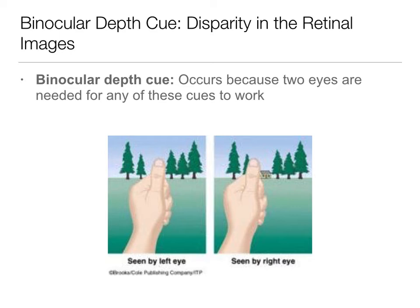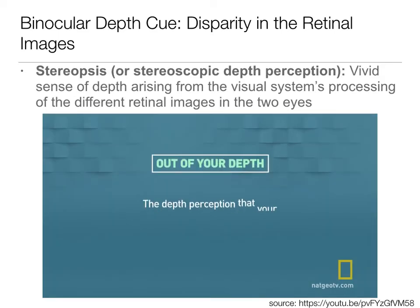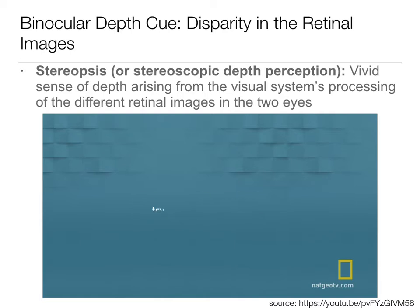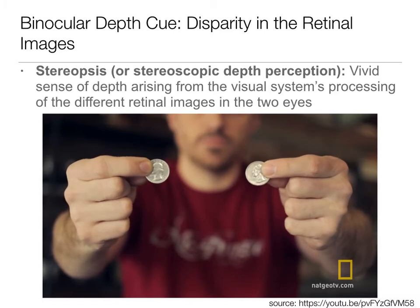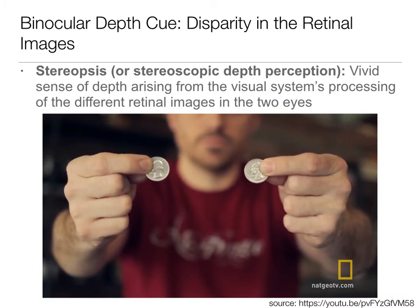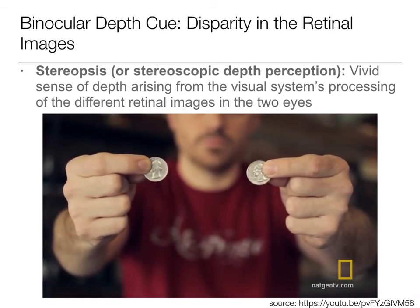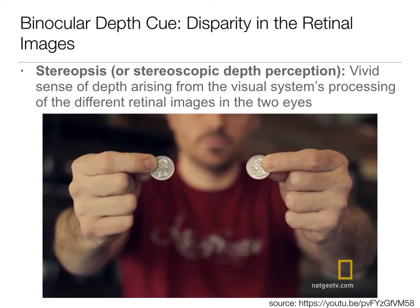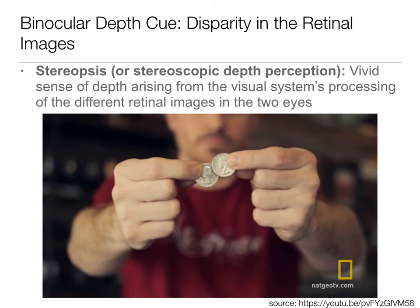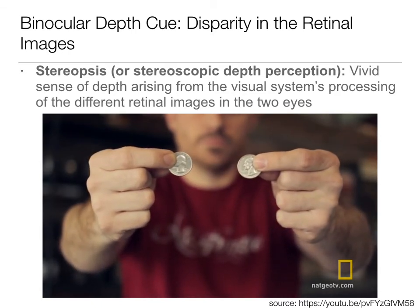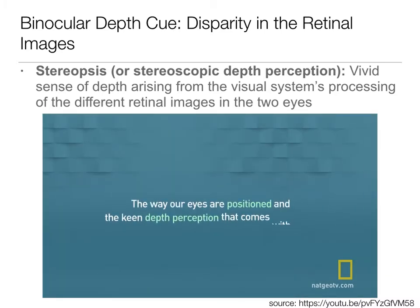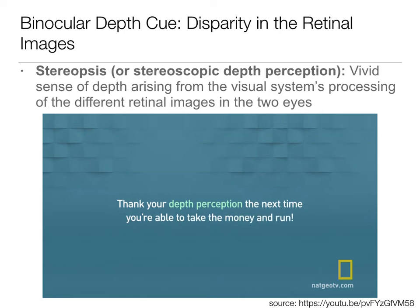The next thing we're going to talk about is stereoscopic depth perception — the idea that we have both of these eyes and they're giving us a really good depth cue. The depth perception that your stereoscopic vision provides is one of the most important tools in your visual toolbox. To illustrate just how useful it is, try this simple experiment: take two coins, preferably of the same size, and pinch one in each hand. Raise your arms at your sides and quickly touch the edges of the two coins together in front of you. Now reset your arms and try it again with one eye closed. Without slightly different perspectives from both eyes creating a helpful sense of depth, the task becomes much harder. The way our eyes are positioned and the keen depth perception that comes with them gave humans evolutionary advantages that have helped us survive and thrive. Thank your depth perception the next time you're able to take the money and run.